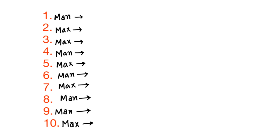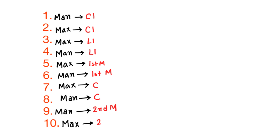Now again follow the general order and write down the names one by one: first two central incisors, then two lateral incisors, then two first molars, then two canines, and then two second molars. So here is the complete sequence.